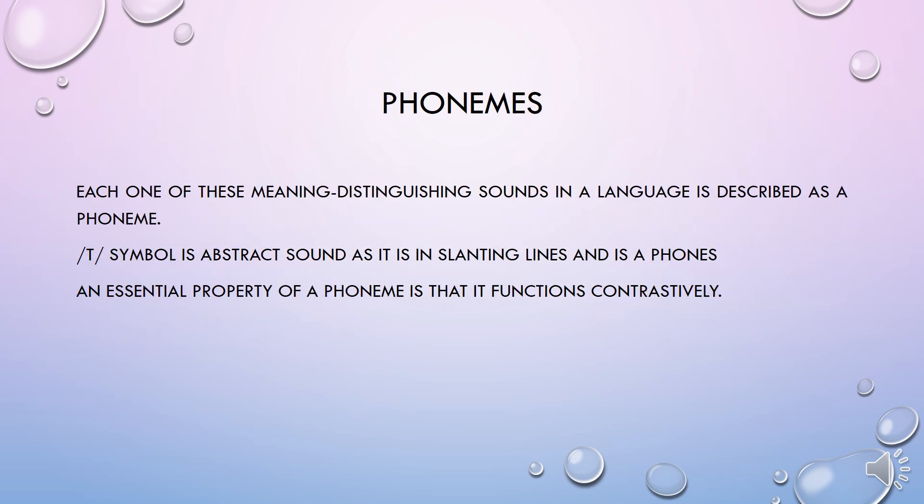Phonemes — each one of these meaning-distinguishing sounds in a language is described as a phoneme. When we learn to use alphabetic writing, we are actually using the concept of the phoneme as a single stable sound represented by a single written symbol, with two slashes around that symbol to indicate that this is an abstract sound. An essential property of a phoneme is that it functions contrastively. We know that there are two phonemes, /f/ and /v/ in English, because they are the only basis of contrast in meaning between words like 'fat' and 'vat' or 'fine' and 'vine'. This contrastive property is the basic operational test for determining the phonemes that exist in a language.